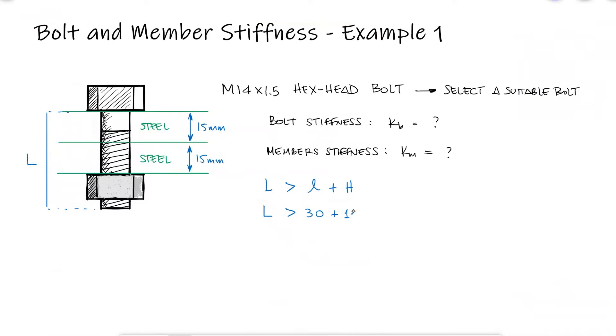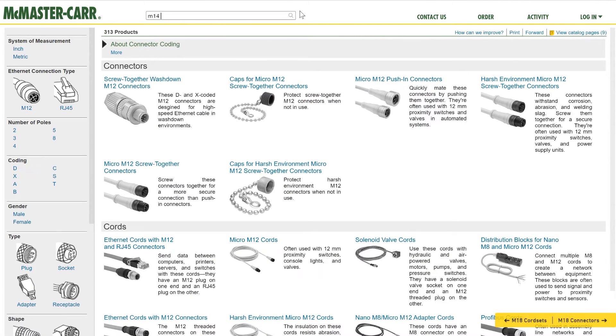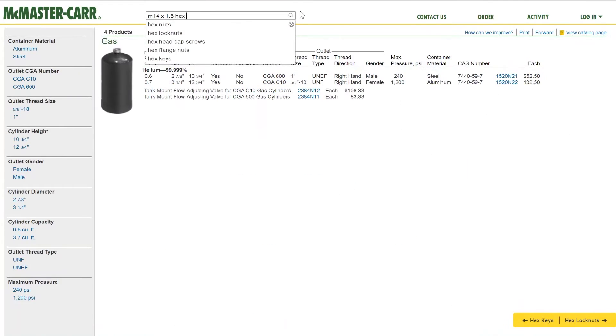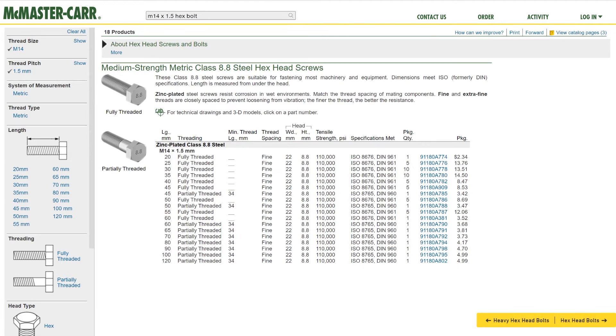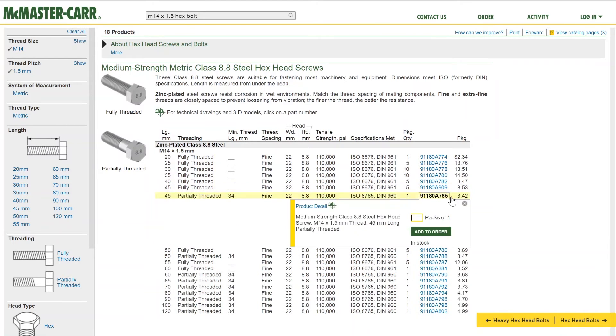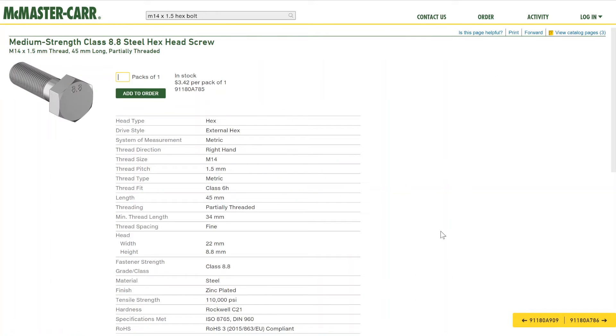With this information, we know that the length of the bolt should be greater than 41mm if we want the nut to be fully engaged with the threads of the bolt. By looking up a partially threaded M14 with a 1.5mm pitch hex bolt, we see that the closest length greater than 41mm is a 45mm long bolt. The threaded length for this bolt is 34mm.